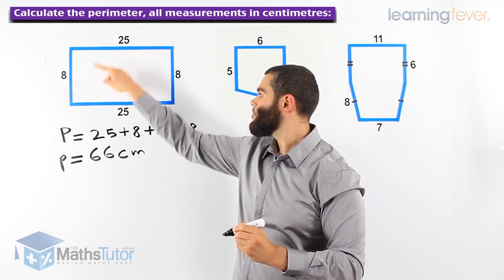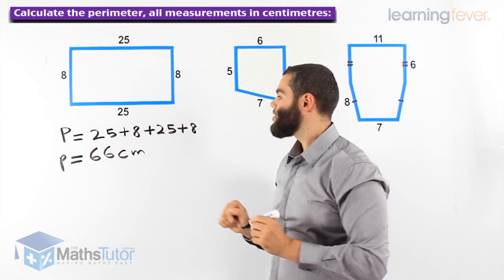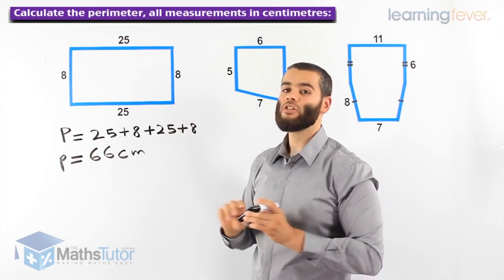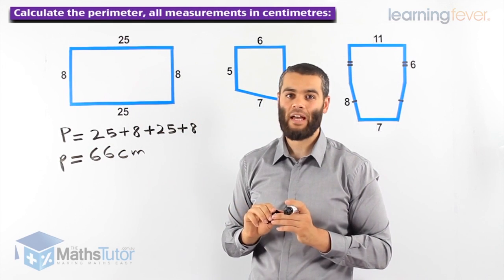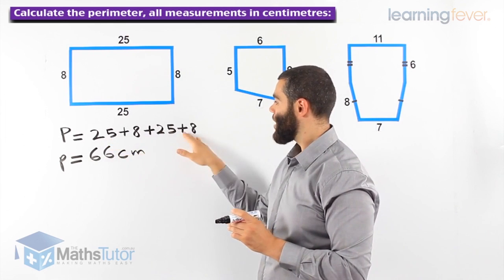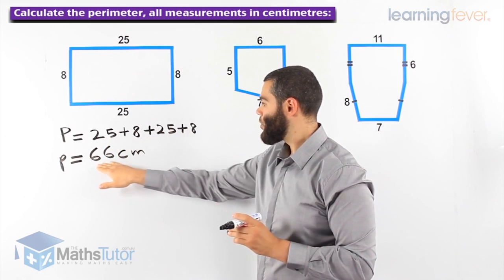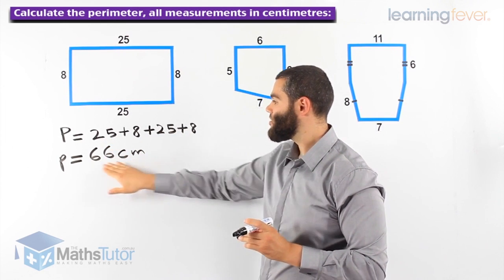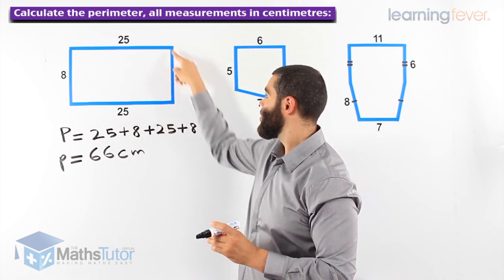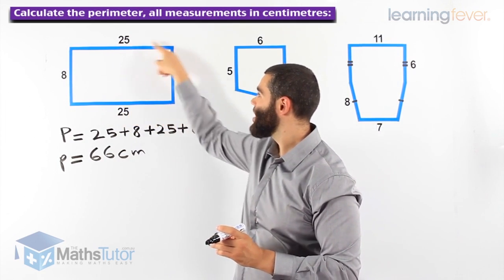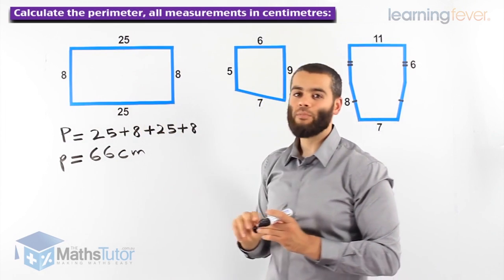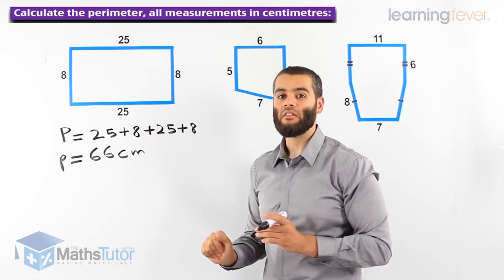So the boundary of the shape is 66 centimeters according to the measurements we have. We always write the unit: 66 centimeters is the total boundary — the perimeter of this shape.